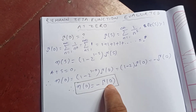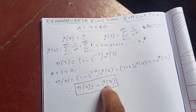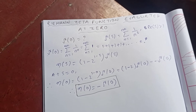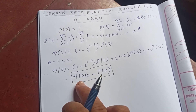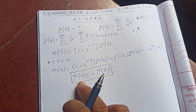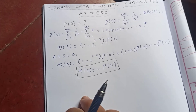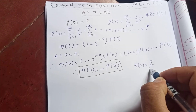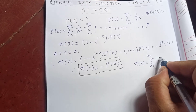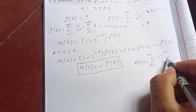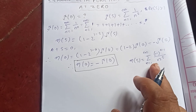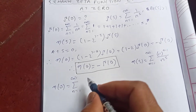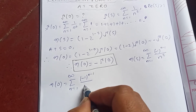So what we are trying to find is zeta of zero. If we can find eta of zero and substitute here, we're done. The eta function is the alternating version of the zeta function: the sum from n equal to one to infinity of minus one to the n minus one over n to the s.